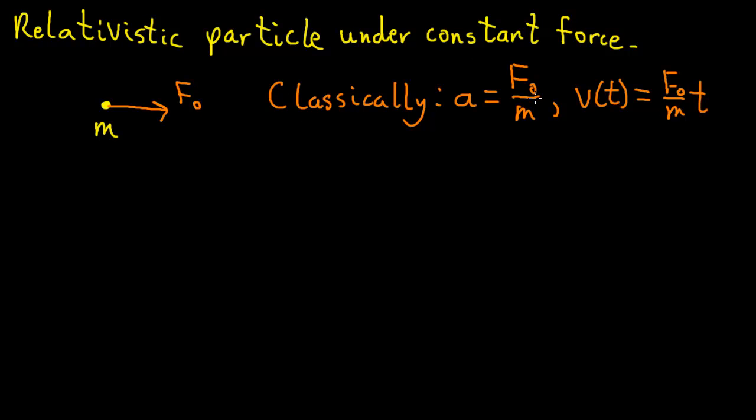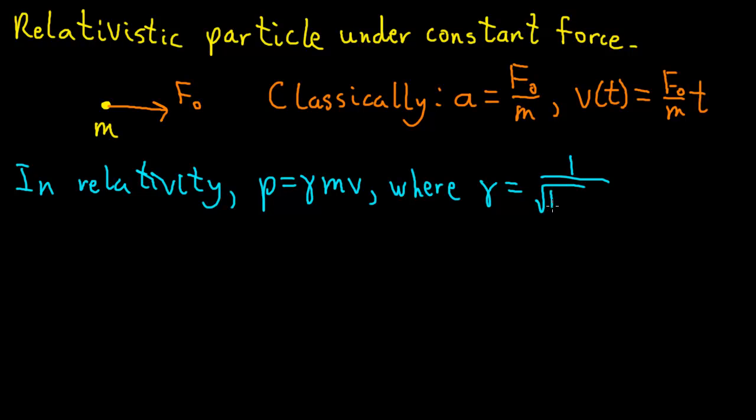So what do we change about this analysis to get something consistent with special relativity? We need to use our revised notion of momentum. In relativity, momentum is no longer just mass times velocity. We have P is gamma mv, where gamma is 1 over the square root of 1 minus v squared over c squared.